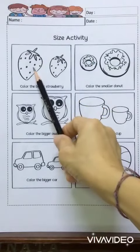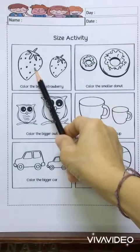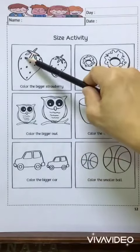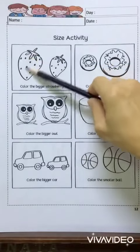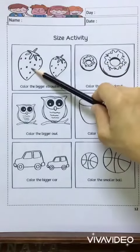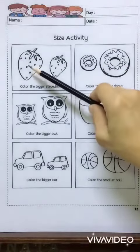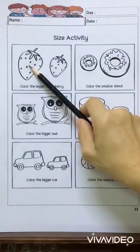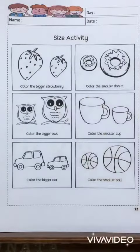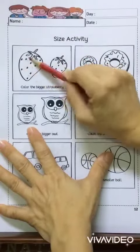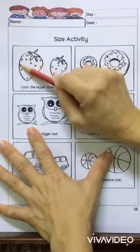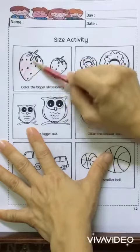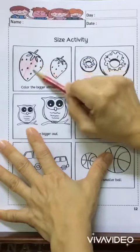Is it this one? Yes. Then you need to color the strawberry. We are going to color red. Children, now you are going to color the strawberry red. Color it nicely.